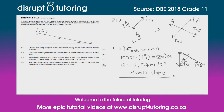So 5.3 says write down the direction of the acceleration of the crate while it slows down from B to C — write only up the slope or down the slope. If we think of a box moving down the slope, we just calculated an acceleration going down the slope which is positive, and that's speeding up. When something is slowing down it actually translates as an acceleration going the other way around. So instead of speeding up down the slope, it's slowing down down the slope, which means it's actually accelerating up the slope. So the answer to 5.3 is up the slope.